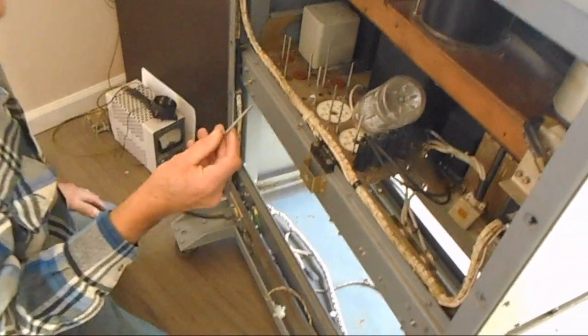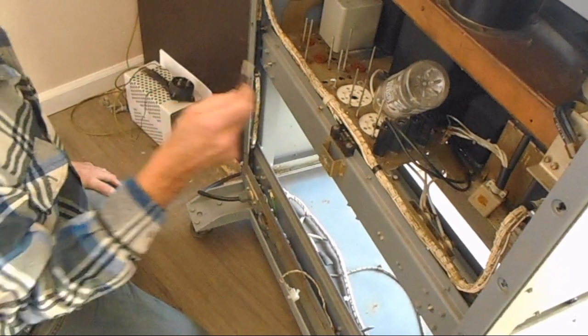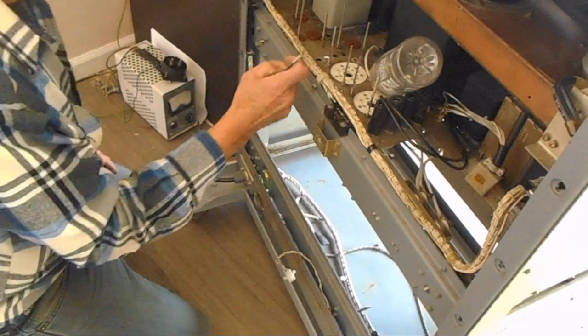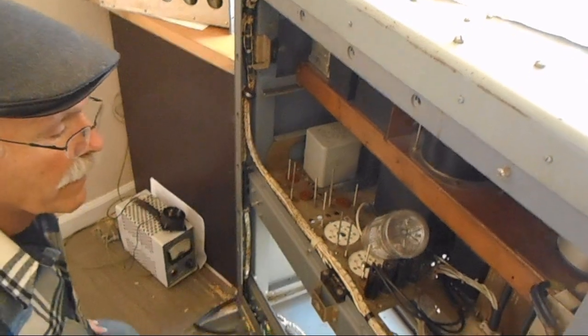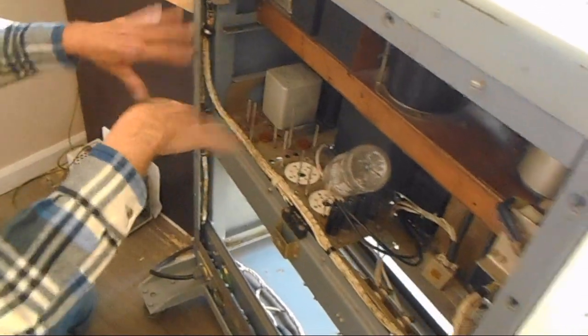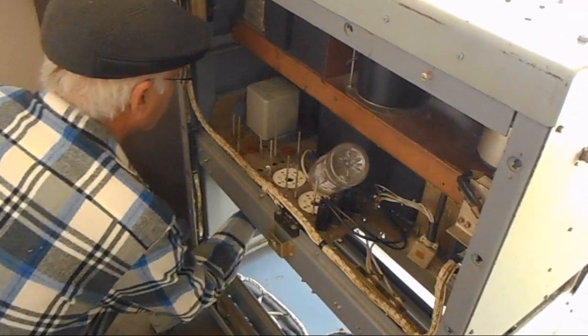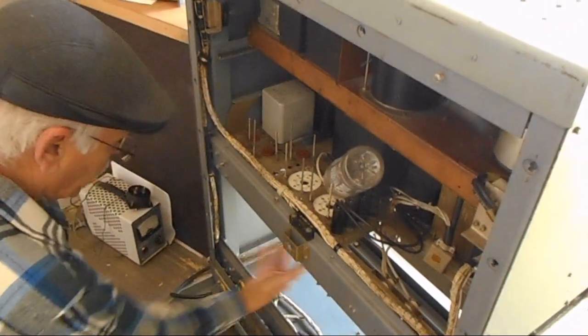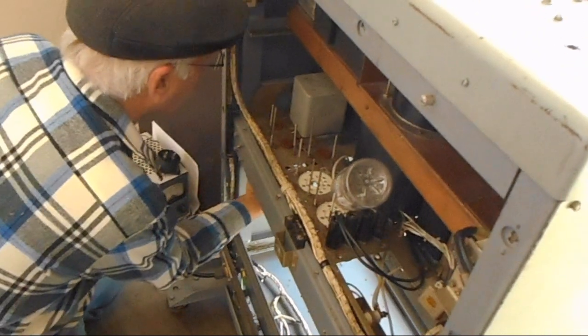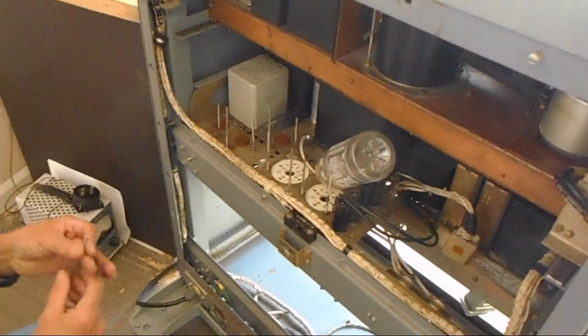So, I forgot. At the hardware store, I was going to get a piece of all-thread, the same size, 6-32 all-thread. These are for the little spring clamps that hold the 5R4 rectifier tubes from bouncing around. But, I can still... While it's in here, if I rack the power supply, I can still get it back in there to thread that in. So, that's alright.